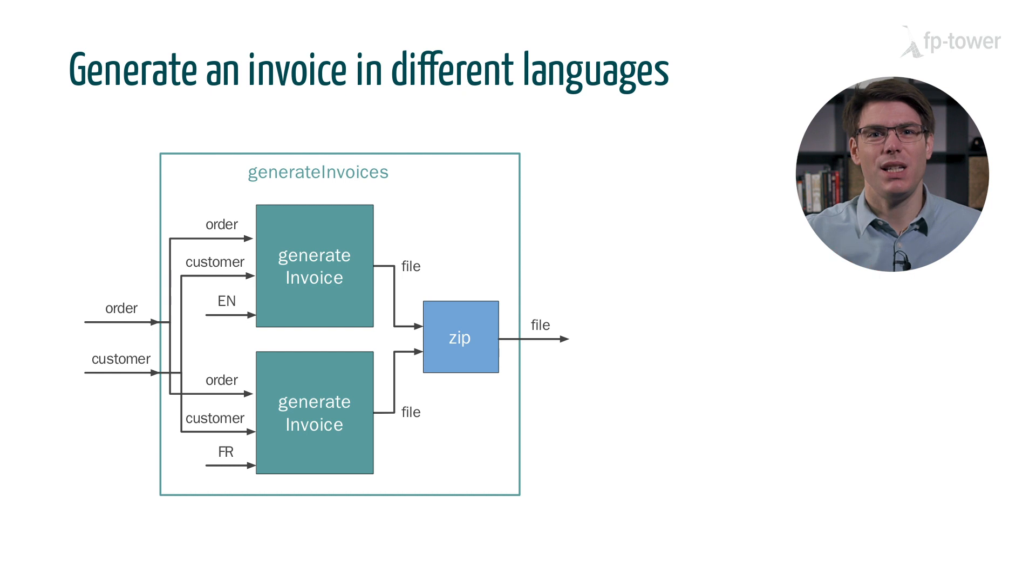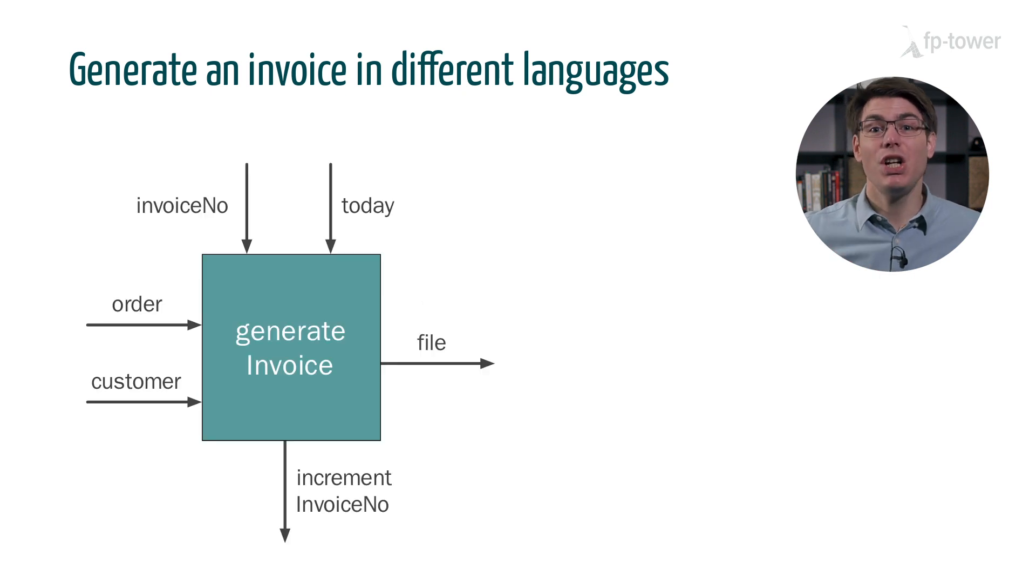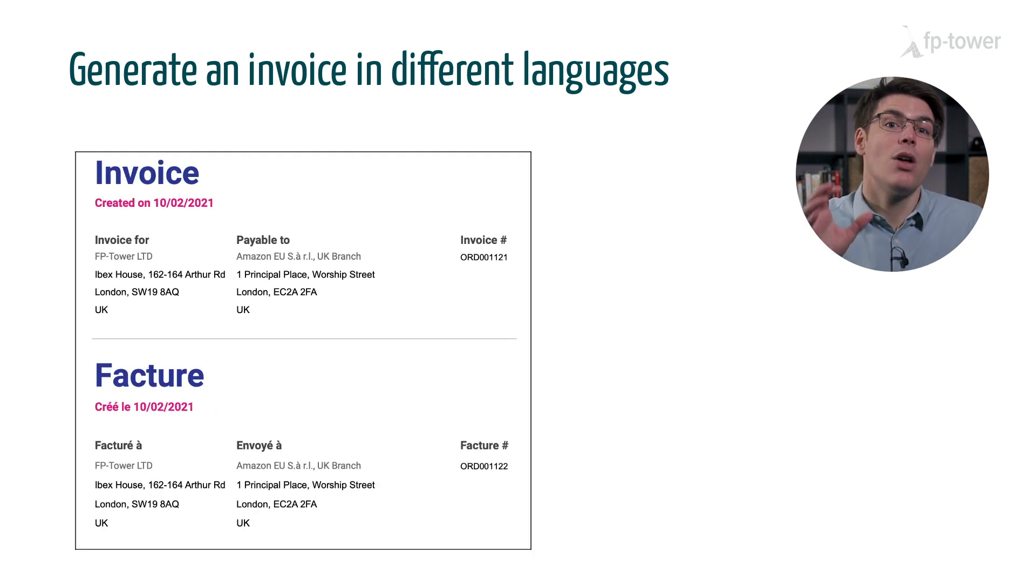It's really easy to miss, but when generating an invoice we fetch the current invoice number from the environment and then we increment it - otherwise we would be using the same invoice number for all documents. The problem is we are generating two versions of the same invoice and we require the same invoice number on both. In other words, we want the language to change between the English and French versions, but not the data inside the invoice.